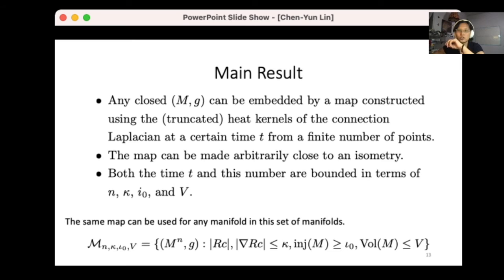Here n is the dimension of the manifold, κ is the upper bound of the Ricci curvature and its derivatives, i₀ is the injectivity radius lower bound, and V is the volume upper bound. Because t and n are only dependent on these geometric quantities, the map that we constructed can be used for any manifold that satisfies the same geometric bounds. Therefore we can consider a collection of manifolds, n, κ, i₀, V.